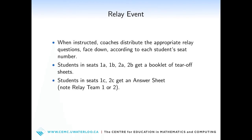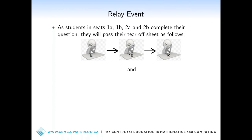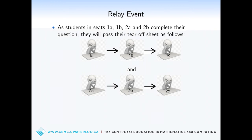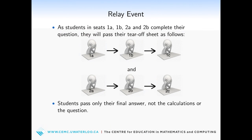Students in seats 1C and 2C get an answer form, and note whether you're on relay team 1 or 2. As students complete their questions, they will pass their tear-off sheet as follows: from seat 1A to seat 1B to seat 1C, and from seat 2A to 2B to 2C. Students in seats A and B should pass only their final answer, not their calculations.